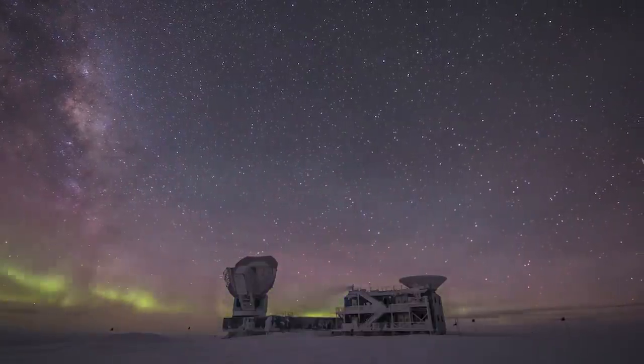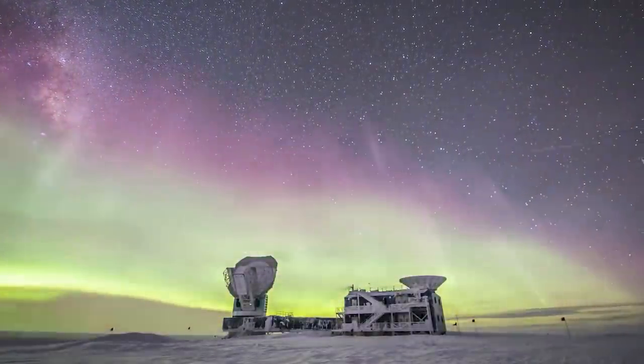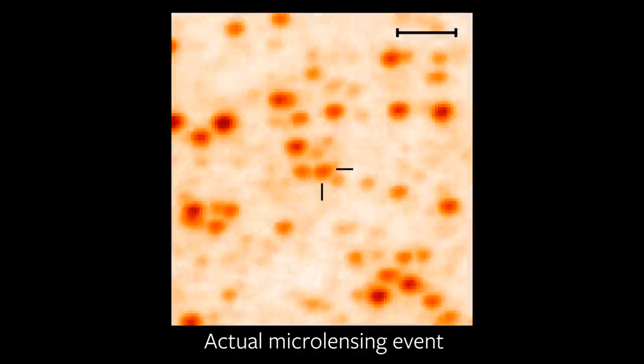From Earth, we can't see the black hole itself, but when it passes in front of a distant star, we can see that star's light brightening and then dimming as they cross paths.